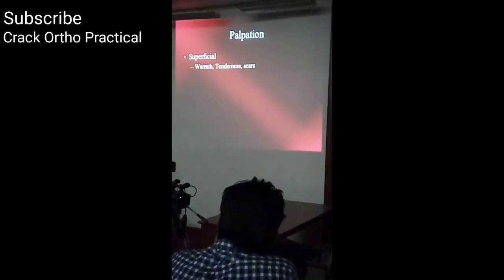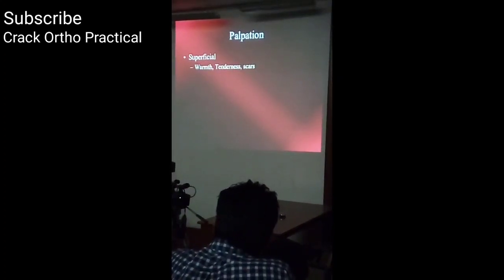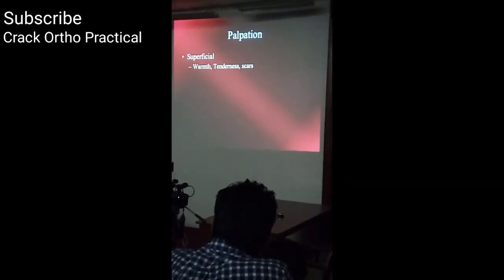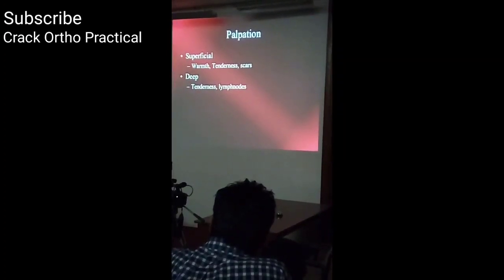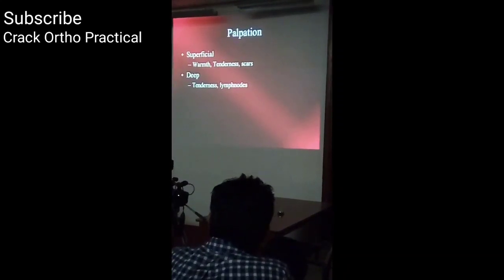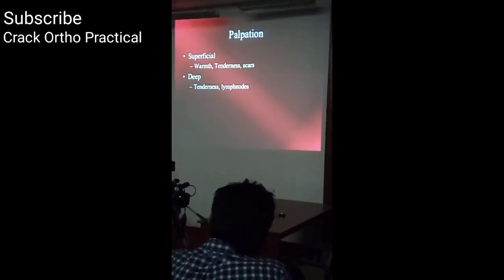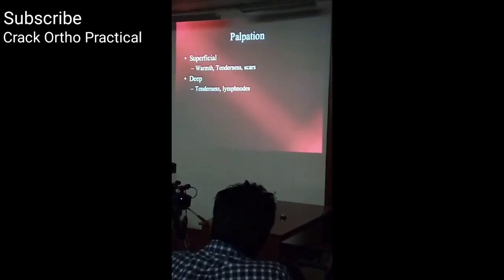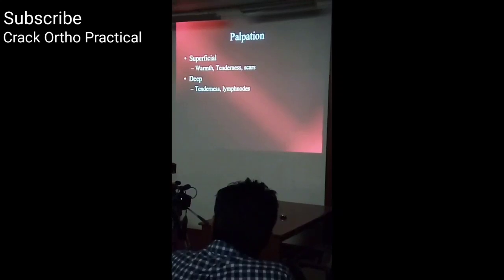In palpation, first look for warmth or local rise of temperature, particularly in the scarpa's triangle. Use the back of the forearm or back of the hand, as the back of the hand is more sensitive for detecting temperature differences. Always compare with the normal side first — palpate the normal side, then the affected side — to detect any local rise of temperature.